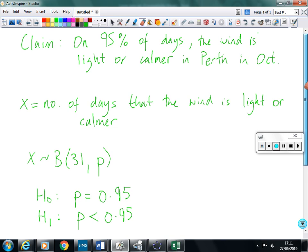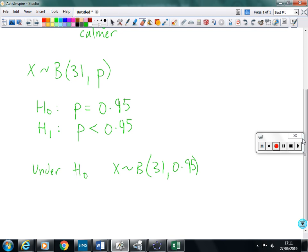Okay, so let's have a look at this. What does this mean? So under the null hypothesis, we said X follows a binomial distribution with 31 trials, probability of success 0.95. Now we've observed 27 days when the wind speed is light. Now that seems a bit low, so 95% of 31. I don't know what that is exactly, but I'm sure that 27 is less than that. But the question is, how much less than that? Is it significantly less?